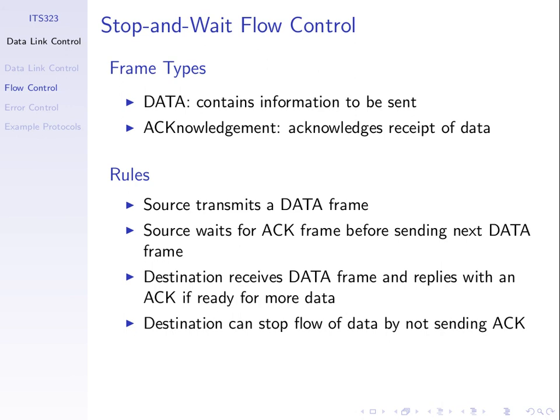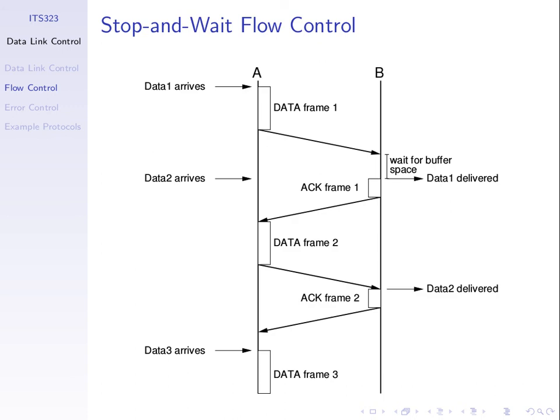We've covered our first flow control protocol. We'll see later a similar technique is used for error control as well. With flow control we assume there are no errors at this stage. Let's say everything is perfect, the data always gets delivered. Any questions about stop and wait, the rules for how it works?